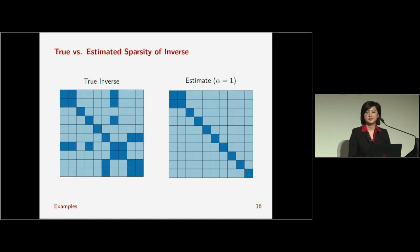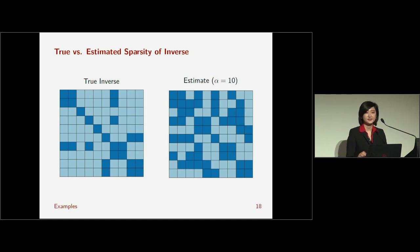Anyways, here's just some results again from simulated data. Left-hand side, or rather, your right-hand side is the true inverse. The light-colored blocks are zeros, and dark-colored blocks are non-zeros. With a small alpha equals one, as you can see, my inverse is fairly sparse, mostly zeros, except on a diagonal. As I increase alpha, I get a more dense matrix, and then alpha equals 10. Half my matrix is non-zeros.